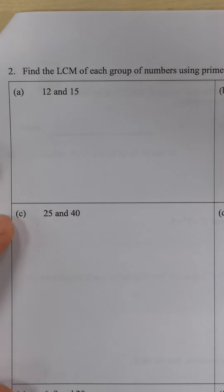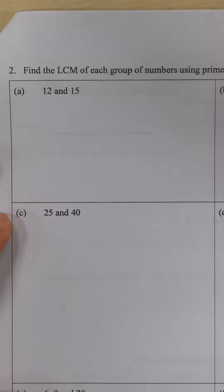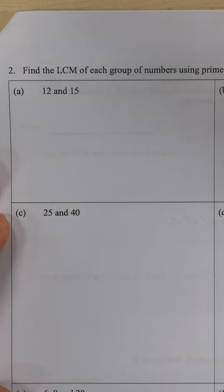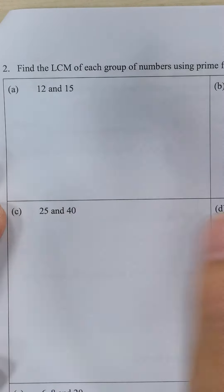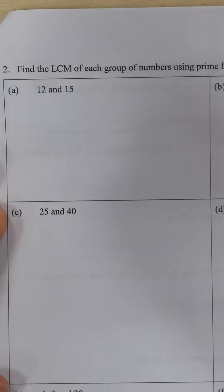Hi, I'm going to show you how to find the lowest common multiple or LCM of two given numbers using prime factorization. We look at the questions here. We have two numbers, 12 and 15.